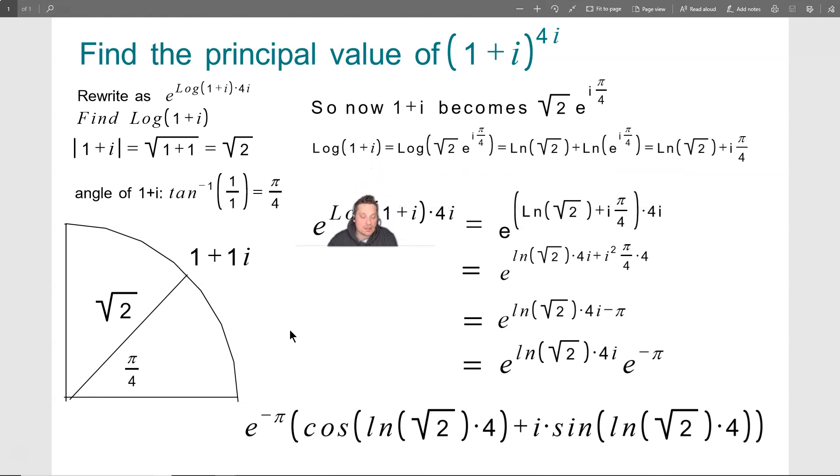So now, e to the log 1 plus i times 4i, can be written as e to the ln root 2 plus i pi over 4 times 4i. So all I've done is I've replaced log of 1 plus i with ln of the square root of 2 plus i times pi over 4, because we did all of that work above to find that it's equivalent.